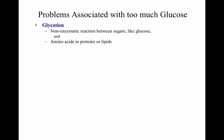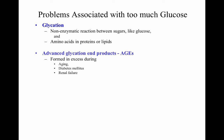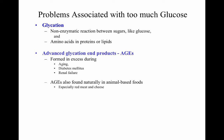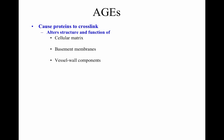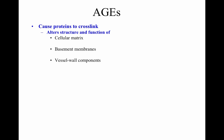Problems from too much glucose include glycation — a non-enzymatic reaction between sugars like glucose and amino acids in proteins or lipids — making things sticky at a cellular level. Advanced glycation end-products (AGEs) form in excess during aging, diabetes mellitus, and renal failure. AGEs are also found naturally in animal-based foods like red meats and cheese, in foods cooked at high temperature — grilled, broiled, roasted, seared, fried — and in highly processed foods. AGEs cause proteins to cross-link, altering structure and function of cellular matrix, basement membranes, and vessel wall components. AGEs are responsible for almost all diabetes complications.